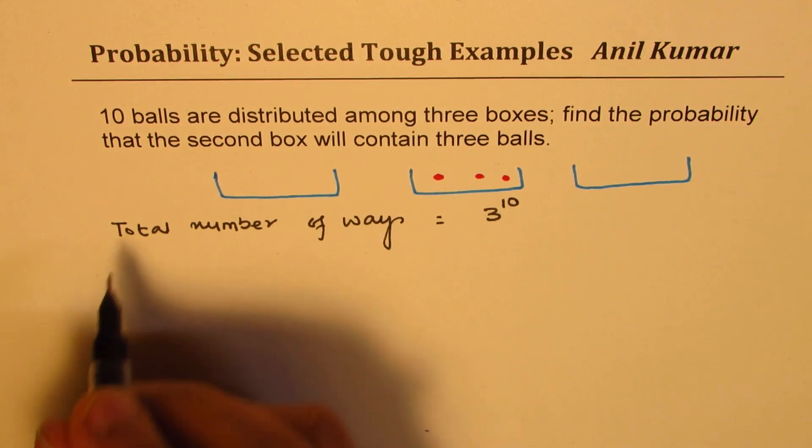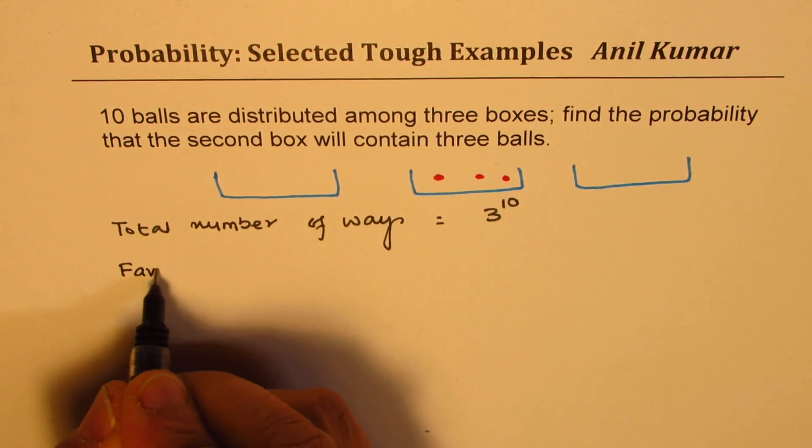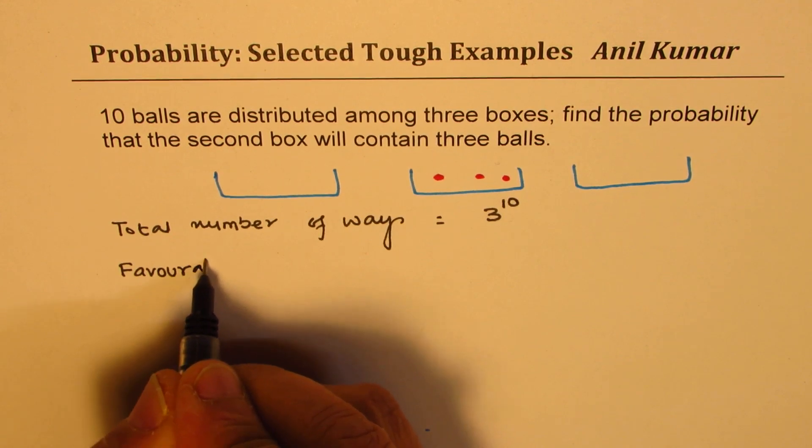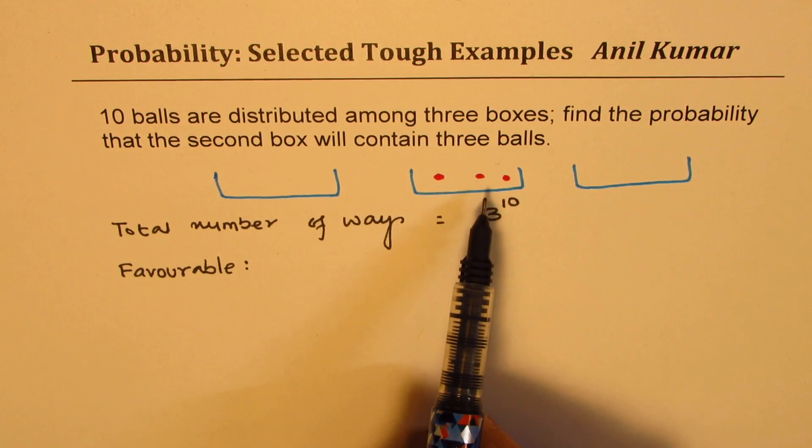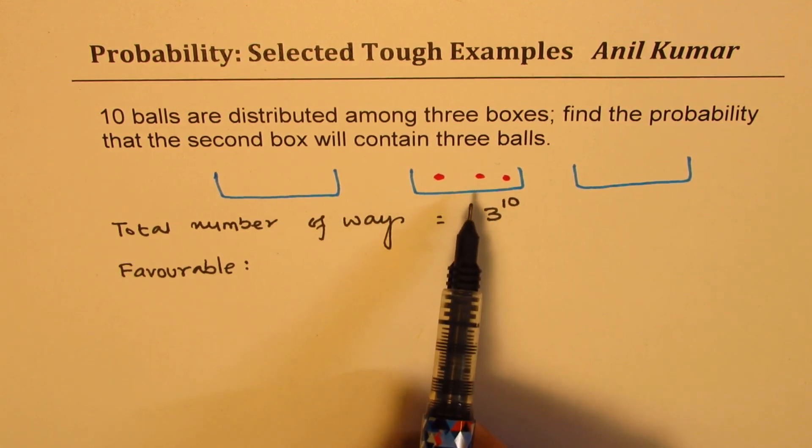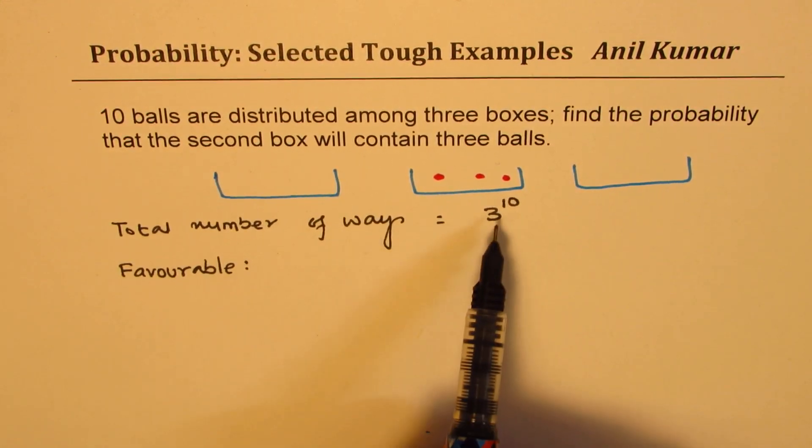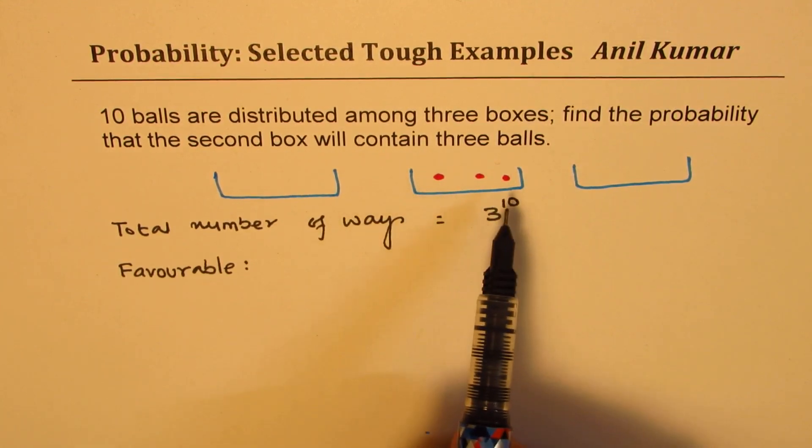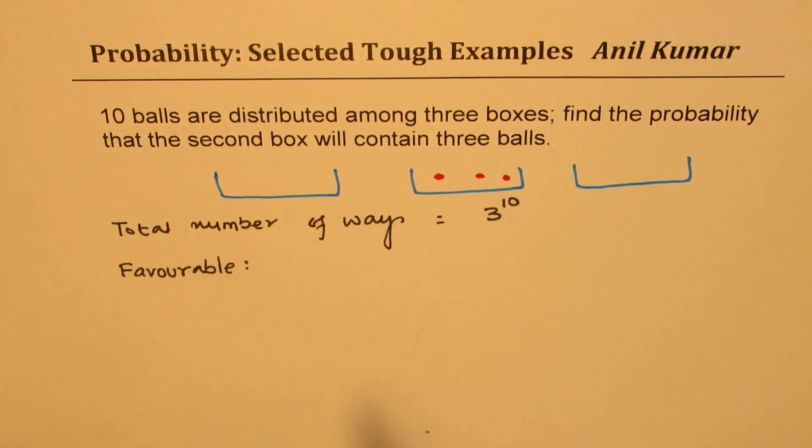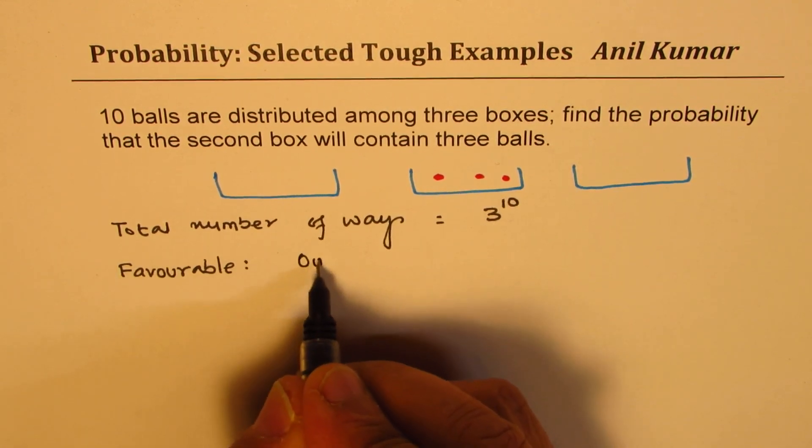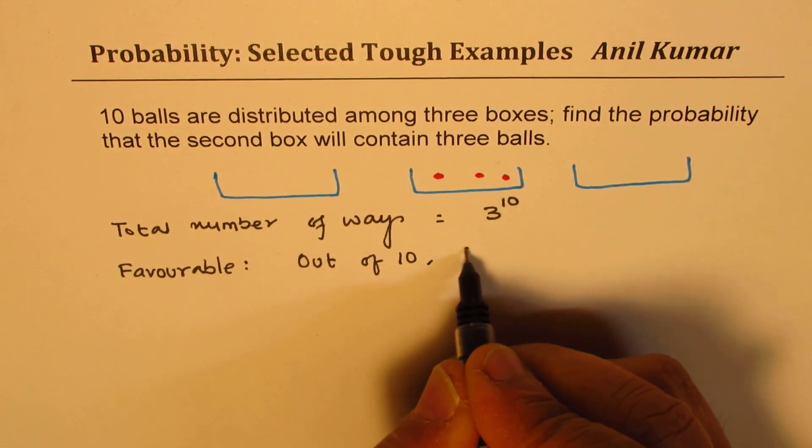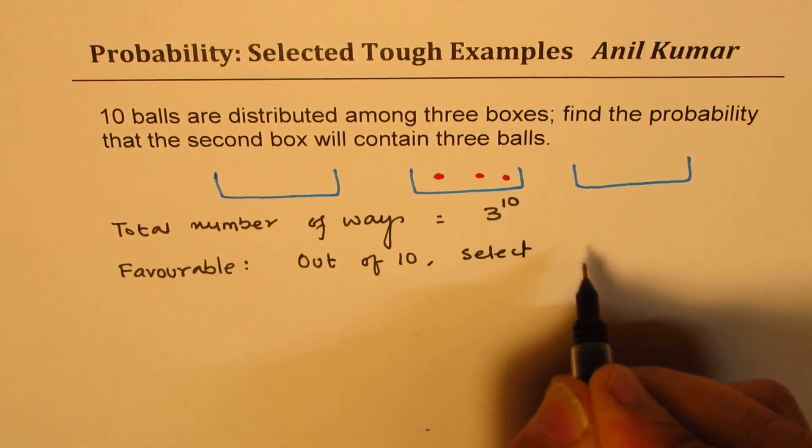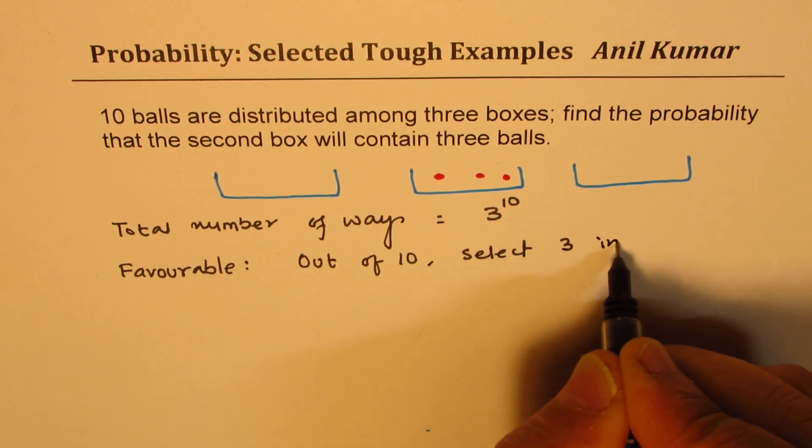Now, we need to look for the favourable cases. We want 3 balls in the center box. Since we have 10 balls, we could select these 3 in how many ways? Out of these 10 balls, you can select 3 in how many ways?